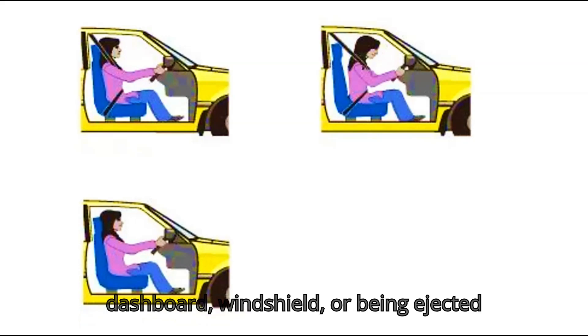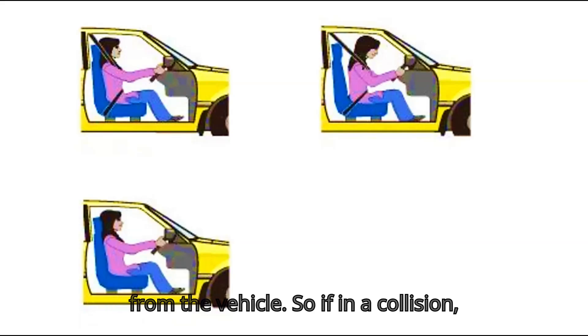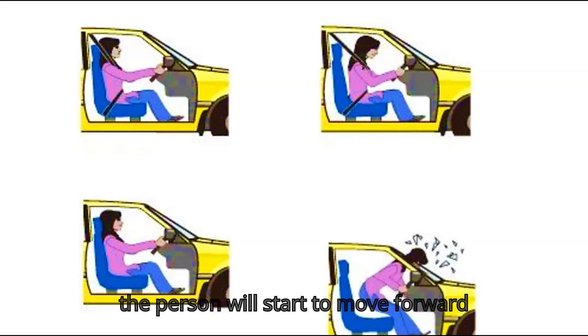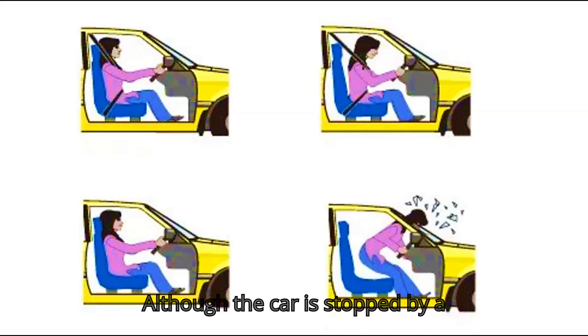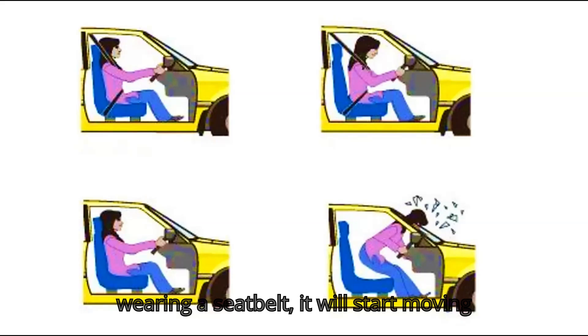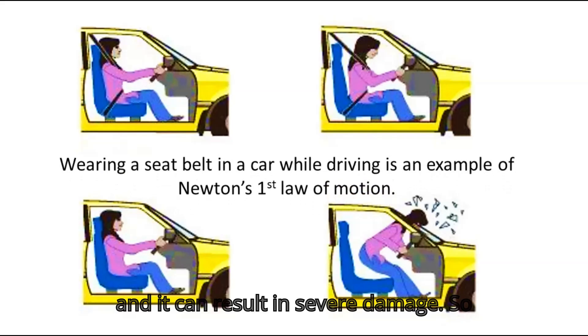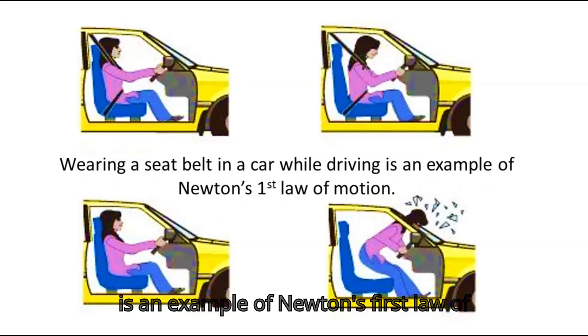Without a seat belt, the passenger's inertia would cause them to keep moving forward, potentially leading to serious injuries from hitting the dashboard, windshield, or being ejected from the vehicle. If in a collision the person is not wearing a seat belt, they will continue moving forward even though the car has stopped, due to inertia, resulting in severe damage. Wearing a seat belt is therefore an example of Newton's first law of motion.